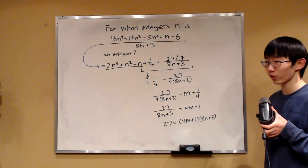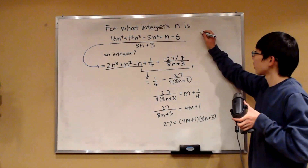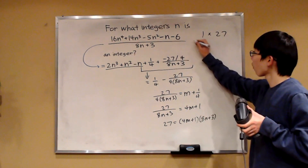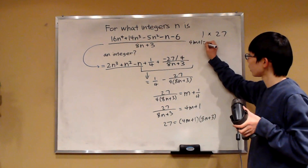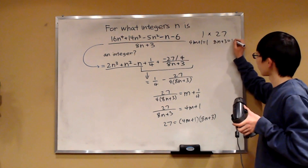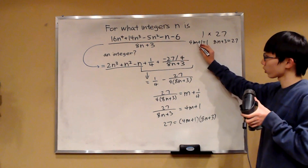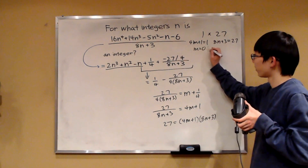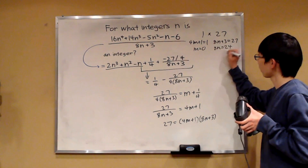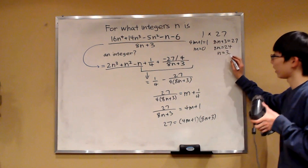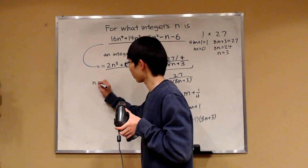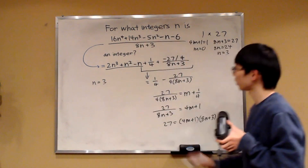By finding factor pairs of 27, we can solve for m and n. What are the factors of 27? One possibility is 1 times 27. So we can set 4m plus 1 equal to 1, and 8n plus 3 equal to 27. Solving: m equals 0, and 8n equals 24, so n equals 3. This is one solution — n equals 3 makes the expression an integer.